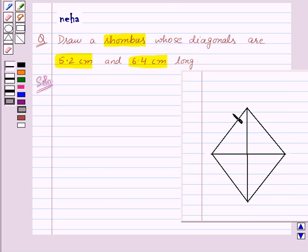So, here we have a rhombus and let us name it as ABCD. In the question, we are given that the two diagonals are 5.2 cm and 6.4 cm long. So, let's take AC as 5.2 cm and BD as 6.4 cm. Let us mark the intersection point of BD and AC as O.